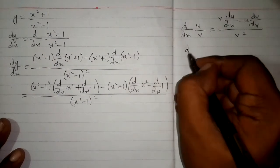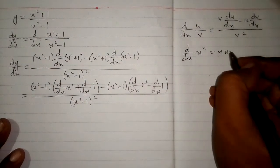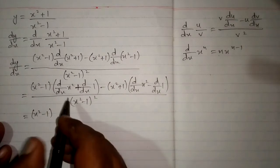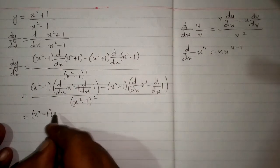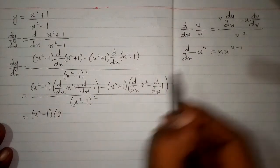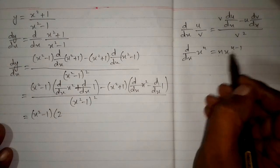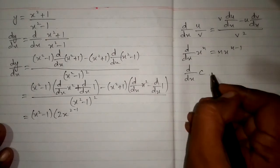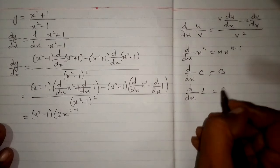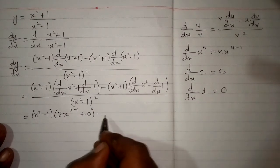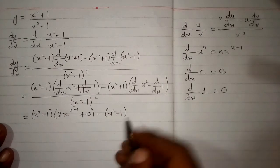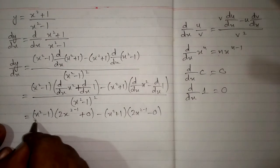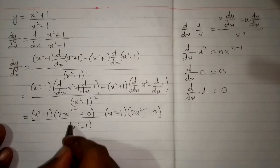Now we will apply the power rule of differentiation, which is d by dx of x to the power n is equal to n times x to the power n minus 1. So first we write x square minus 1. Then applying the power rule: 2 times x to the power 2 minus 1, and the derivative of any constant is 0, so the derivative of 1 is 0. Minus x square plus 1, then again 2 times x to the power 2 minus 1 minus 0, upon x square minus 1 whole square.